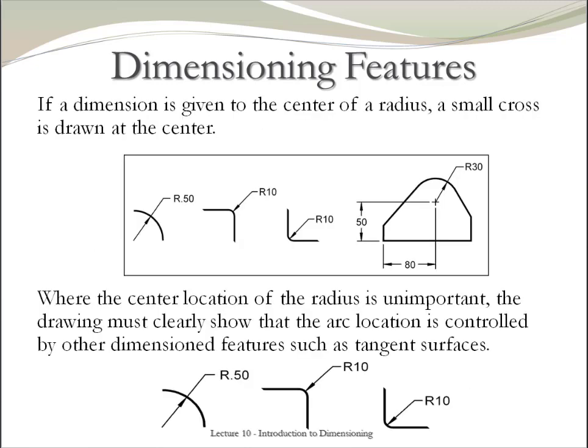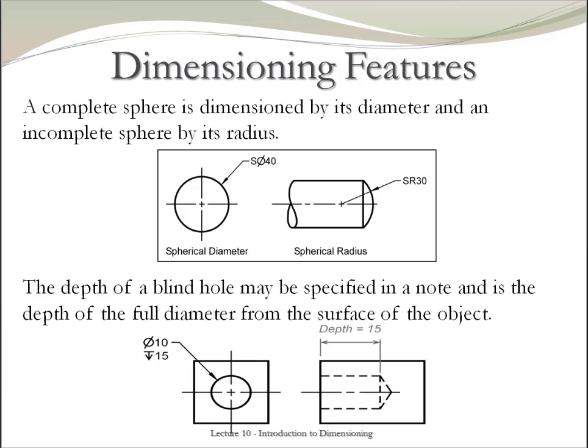If you are dimensioning a curve or a fillet, you may do so using any of the ways shown here. If the location of the radius is important for your feature, a cross must be drawn at the center of the radius. If you are dimensioning a spherical component, you need to define using a diameter if it is complete or radius if it is incomplete.